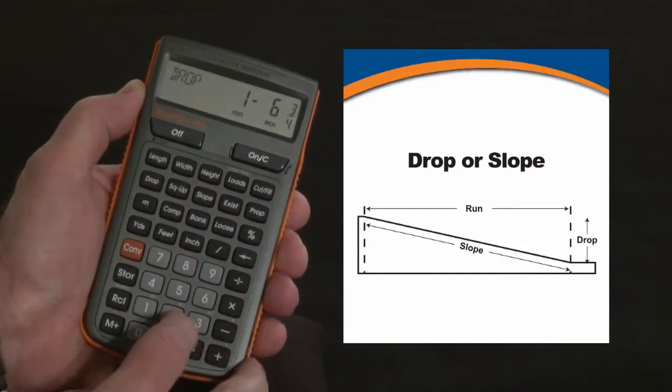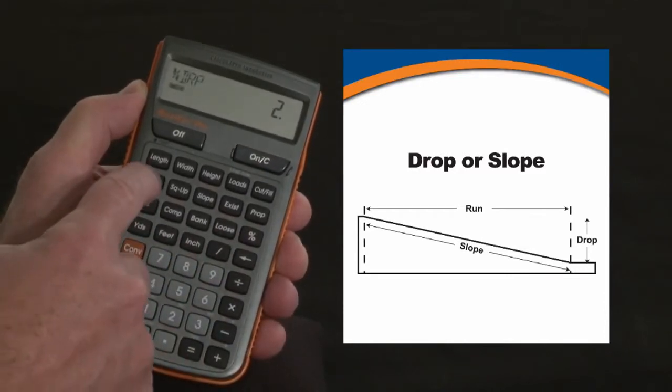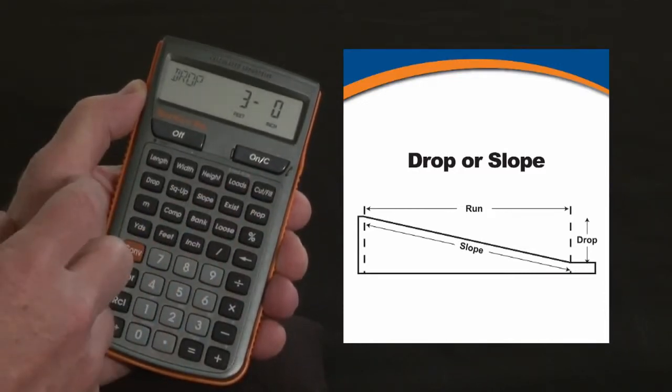You can also enter that as a percentage. Two percent is my drop, and over that entire run you'll be down an even three foot.